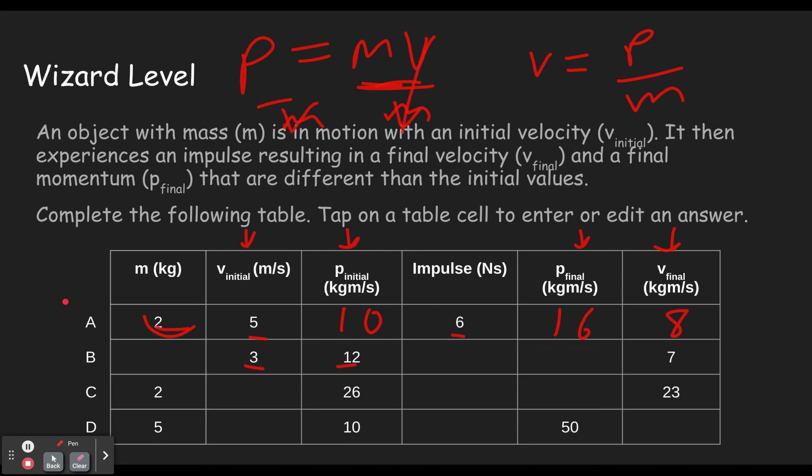Which will cancel the velocities. And we get m equals p over v. So p 12 over v 3 gives us a mass of 4. So now we can use our final velocity times a mass of 4. 4 mass, 7 velocity gives us 28 for our final momentum. That means we needed an impulse of 16 to go from 12 to 28.